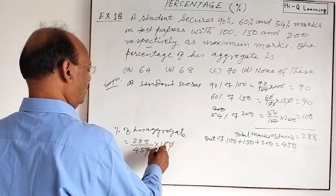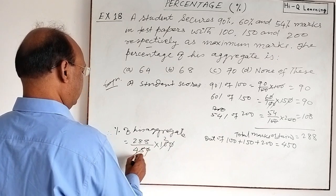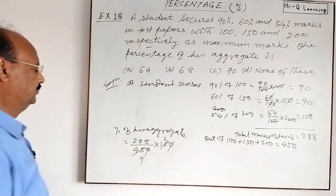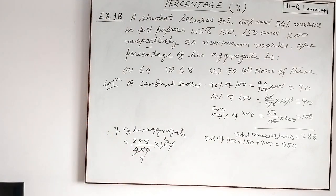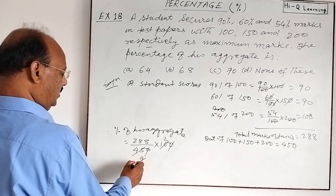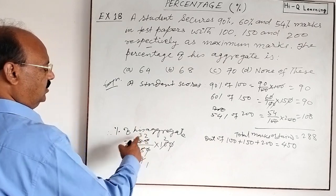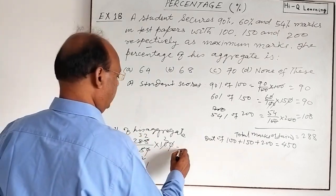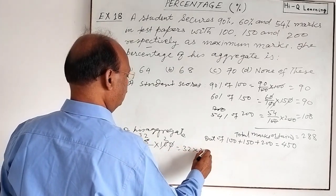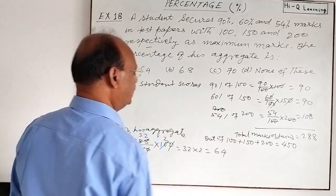Zero will be cancelled out. 5 twos are 10, 5 nines are 45. 9 ones are 9, 9 threes are 27, 9 twos are 18, so 32 into 2. Here we are getting 32 into 2. This is equal to 64.